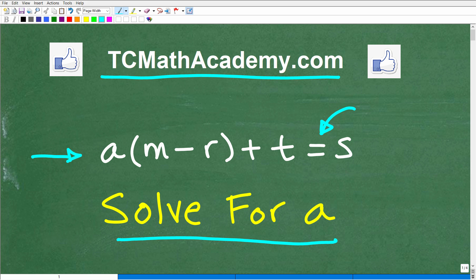So the objective here is to solve for a. You can see we have the variable a, m, r, t, and s. In other words, we want to rearrange all of these variables such that we have a new equation where a is equal to whatever right here.